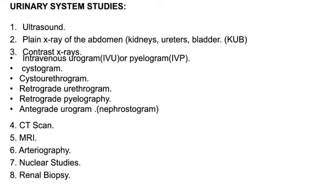Then we have plain X-rays — in this case we have KUB, kidney, ureter, and bladder. For contrast studies, we have a variety: IVU, cystogram, cystourethrogram, retrograde urethrogram, retrograde pyelography, and antegrade urogram. You also have CT scan, MRI, arteriography, nuclear studies, and renal biopsy. Those are the principal ones we need to know.